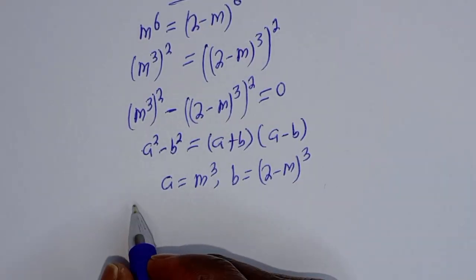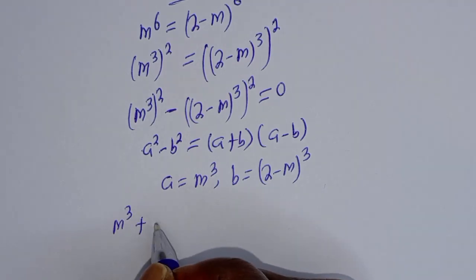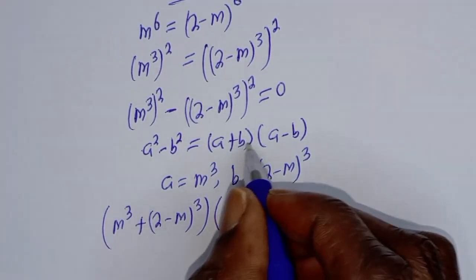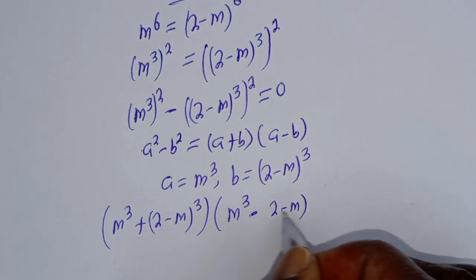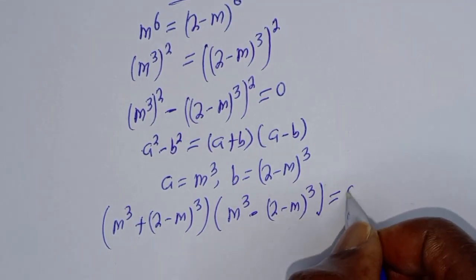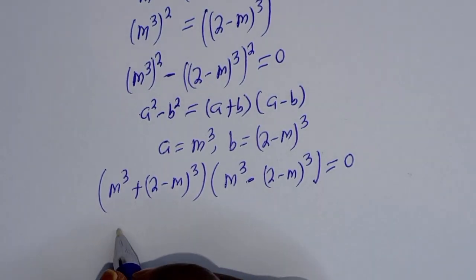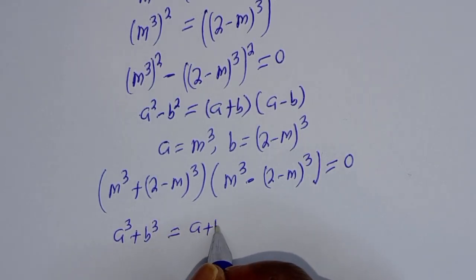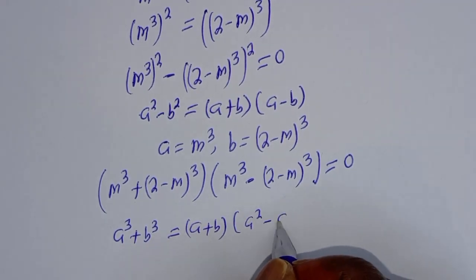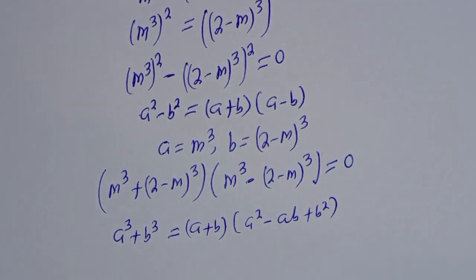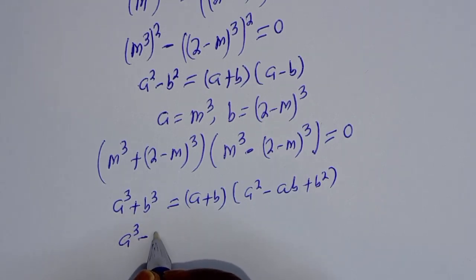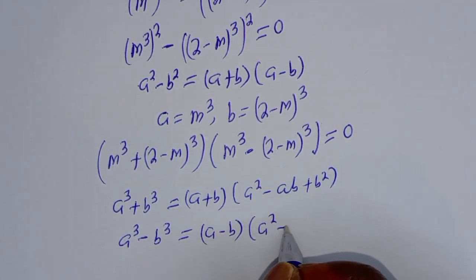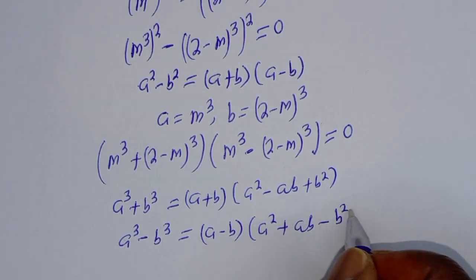Let's substitute. We have m raised to power 3 plus 2 minus m raised to power 3, multiplied by m raised to power 3 minus 2 minus m raised to power 3, is equal to 0. Take note: if you have a cubed plus b cubed, this equals a plus b bracket a squared minus ab plus b squared. And if you have a cubed minus b cubed, this equals a minus b bracket a squared plus ab minus b squared.